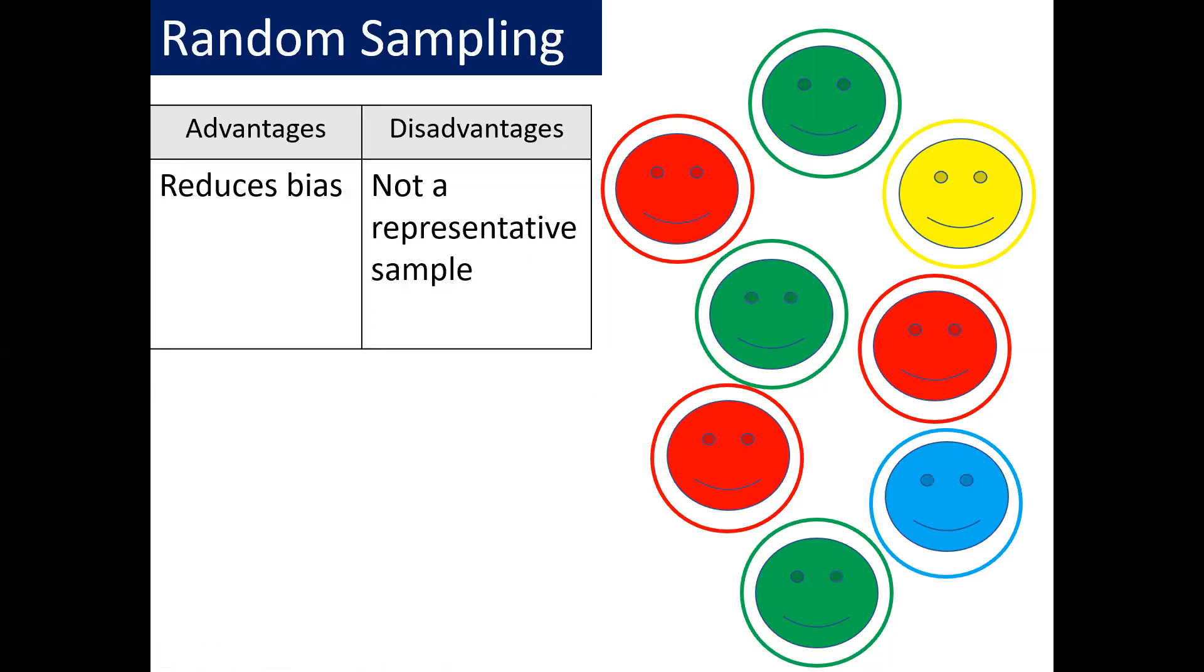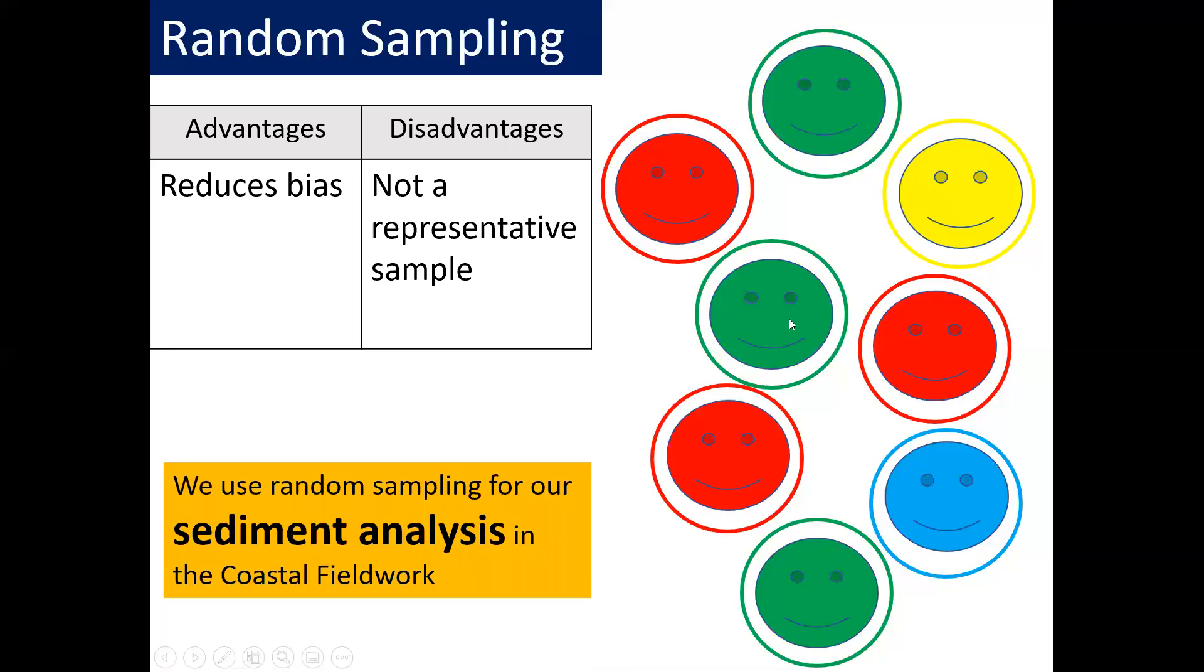The advantages of random sampling, it reduces bias. So as I said to you earlier, you may pick the person nearest to you or the person with the friendliest face or whatever. This random sampling reduces bias and stops that from happening. However, a key disadvantage is it's not a representative sample. So for example, you may do a random number generator and it may give you the number three. If we go one, two, three, we may end up speaking to the yellow person. However, there is only one yellow person on here. Most people are green or red. Therefore, it would not be a representative sample.